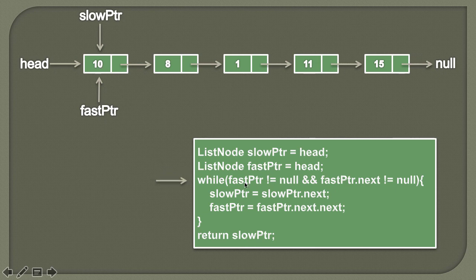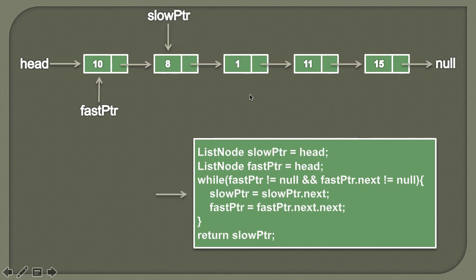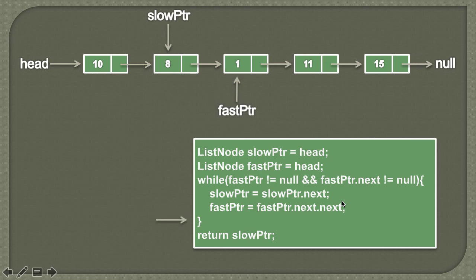We check whether the fast pointer is equal to null or not. The fast pointer points to the first node, which is not null. Then we check whether fast pointer's next is null — the second node is also not null. Therefore, the while loop condition is true and execution enters the while loop. We traverse the slow pointer to its next value, and similarly traverse the fast pointer by two nodes — fast pointer's next-next value.